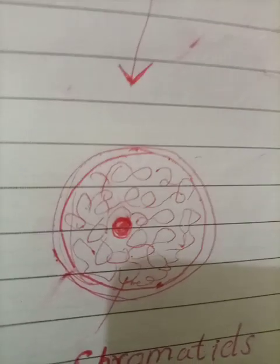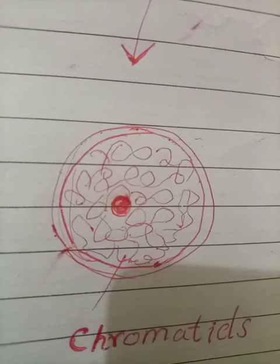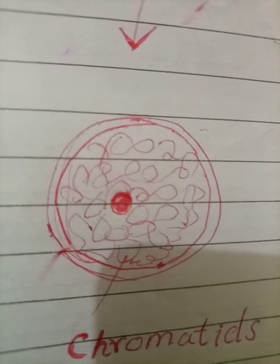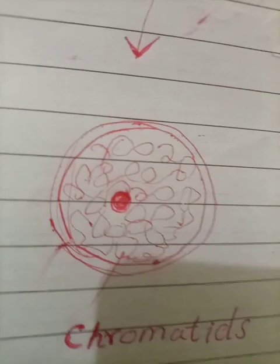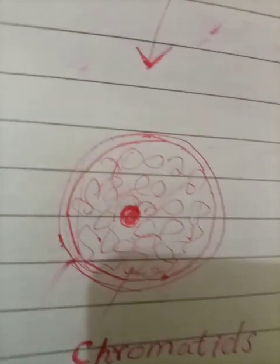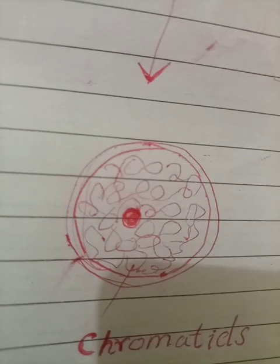There is a double membrane on the outside enveloping the nucleus. There is a small ball-like structure in the center known as the nucleolus. Then there are thread-like structures that are intertwined around each other — these are known as chromatids.